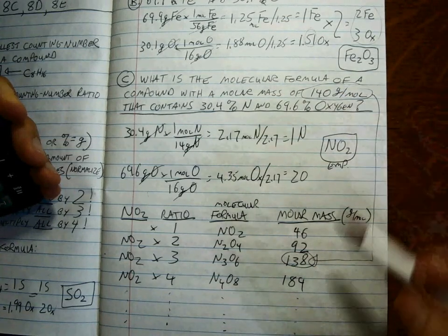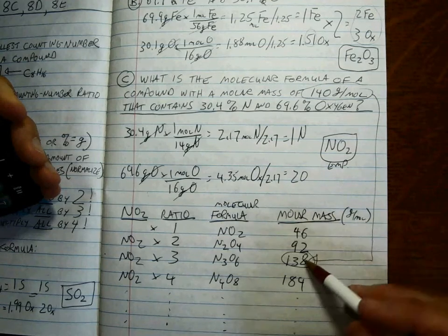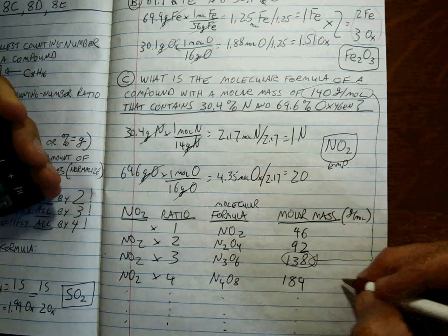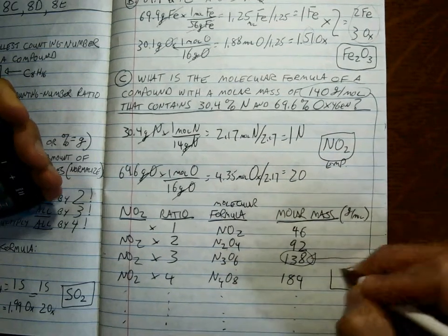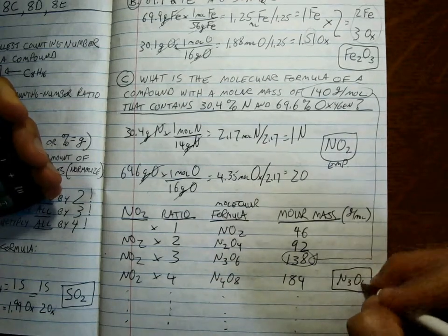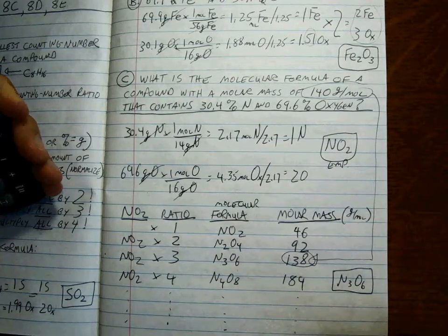Or we measured. And then this is what we would get if we calculated it. Those are the closest. So the molecular formula would be N3O6. Okay?